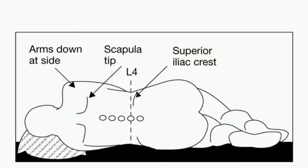Now, coming to positioning. Proper positioning is essential for a successful block. Proper positioning can be difficult for several reasons. First, your assistant may not understand how the patient should be positioned or the rationale behind positioning. Second, the patient may not understand your instructions. Third, sedation may make the patient unable to cooperate or follow directions.